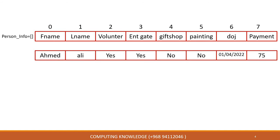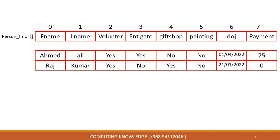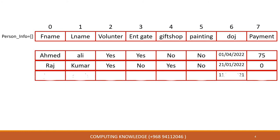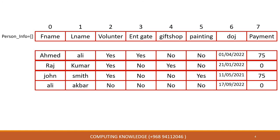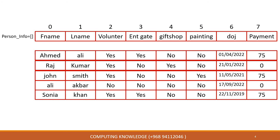For example, suppose the first name is Ahmad and last name is Ali, working as a volunteer - I put 'yes'. When working as a volunteer, one of the area options should be yes. I put yes on entrance gate. In the second record, yes on gift shop. Third record, yes on painting and decorating. In another record, this person is not working as a volunteer, so I put no in all fields: volunteer no, entrance gate no, gift shop no, painting also no.